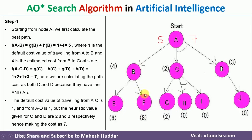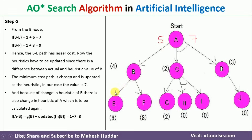We consider A→B as a smaller problem to solve. B now becomes the initial node. From B, we select either E or F. We calculate f(B,E) = g(E) + h(E) = 1 + 6 = 7, and f(B,F) = g(F) + h(F) = 1 + 8 = 9. Between these two, 7 is the best option. So the heuristic value of B is updated from 4 to 7.